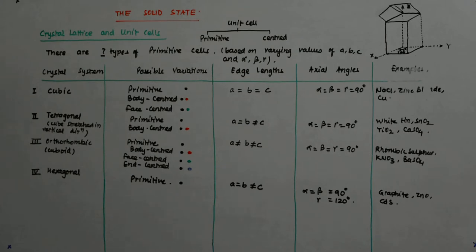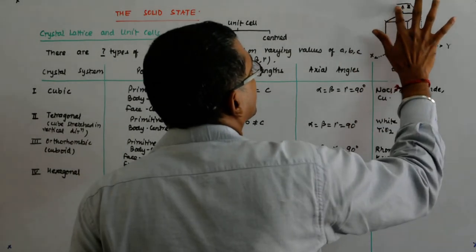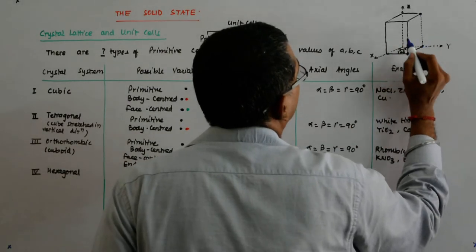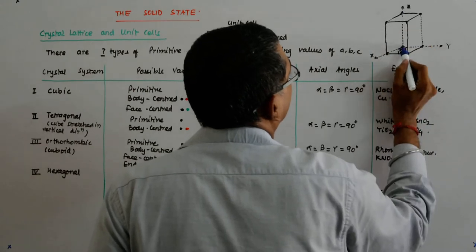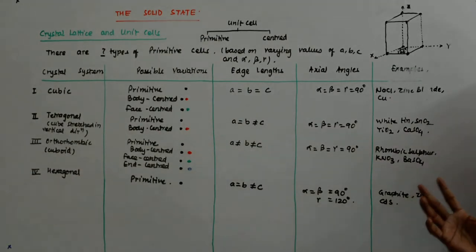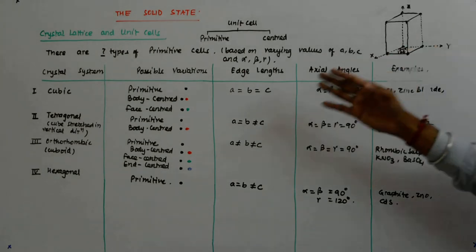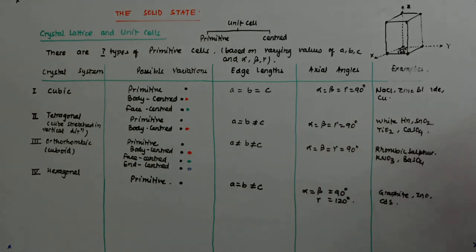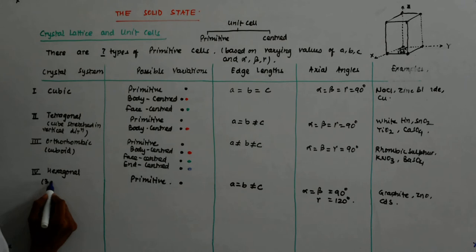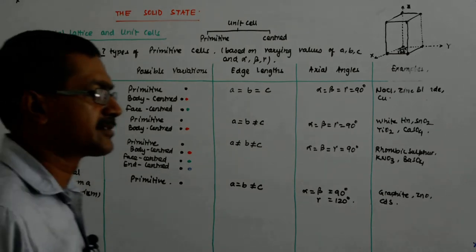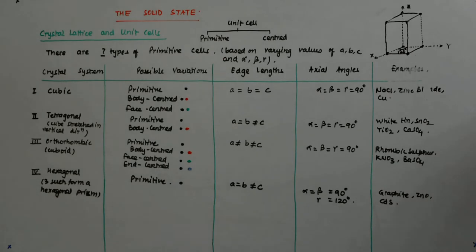This one unit is called the hexagonal primitive. You should understand why it is called hexagonal — it does not look hexagonal from any point of view. I call it hexagonal because three such units form a hexagonal prism. That's why it's called hexagonal. I had a big trouble understanding this: why call it a hexagon when none of the faces are hexagonal?